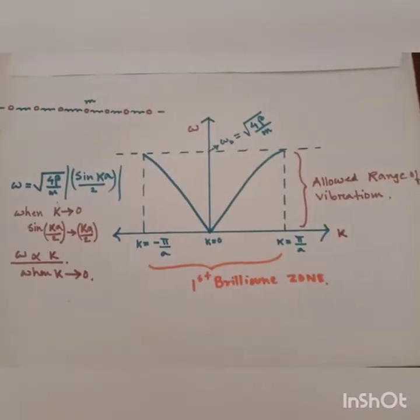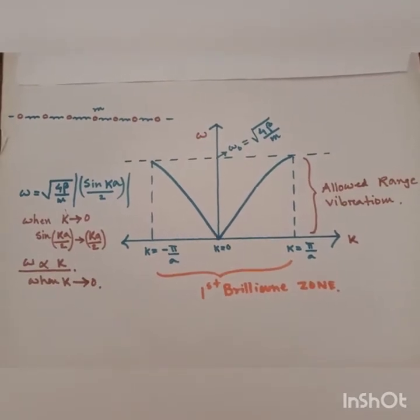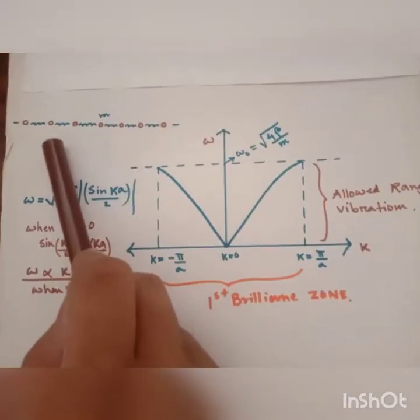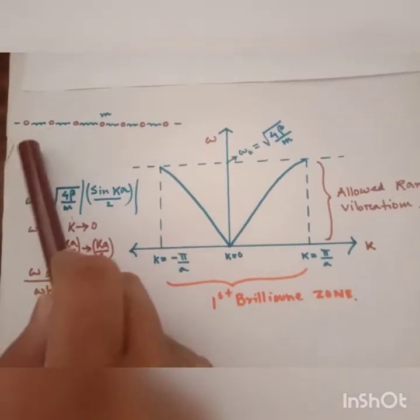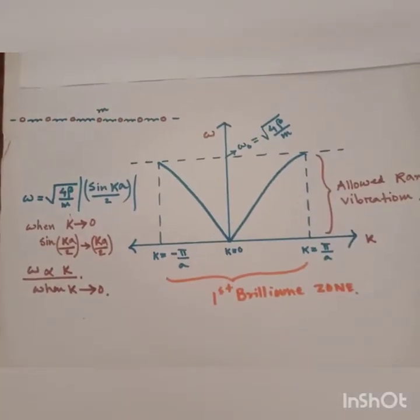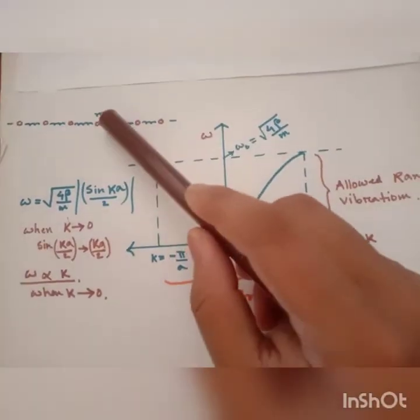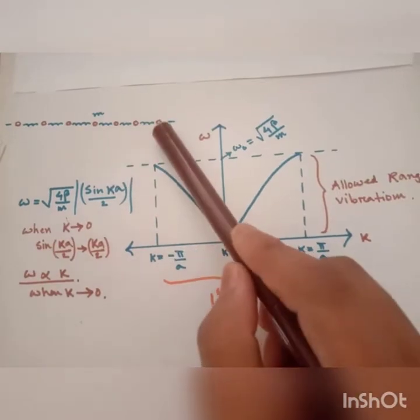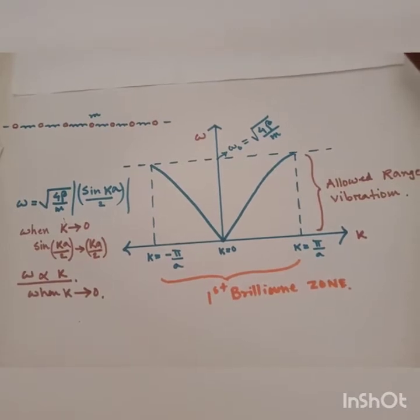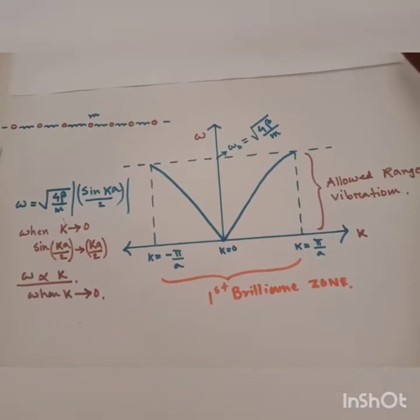This is the dispersion relation for one-dimensional monatomic lattice vibration. Here I have shown an array of one-dimensional atoms of mass m. All these atoms are identical having mass m and they are separated by a distance a. Now if we derive the field of angular frequency omega due to the lattice vibration...